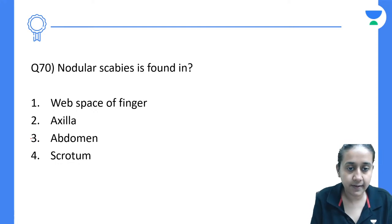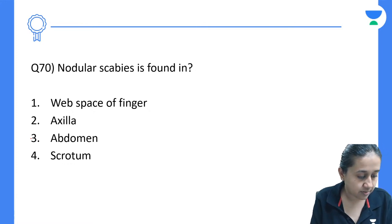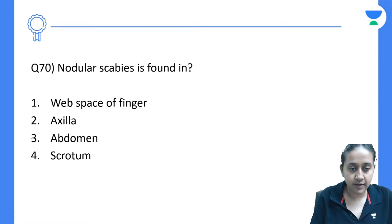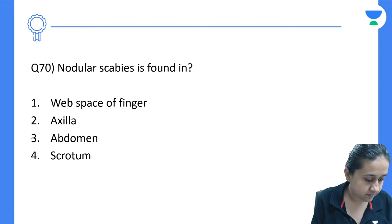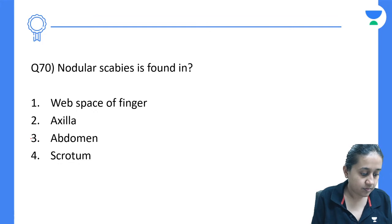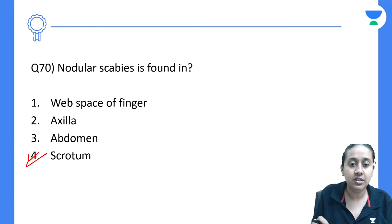Nodular scabies is found in the web spaces of fingers, axilla, abdomen, and scrotum. The answer is option number 4 — scrotum. This is a hypersensitivity reaction to the mite.